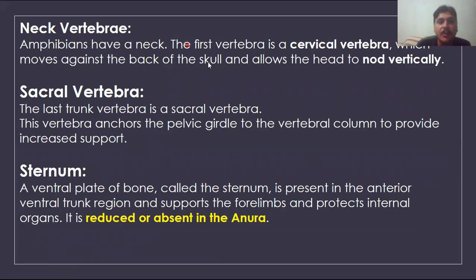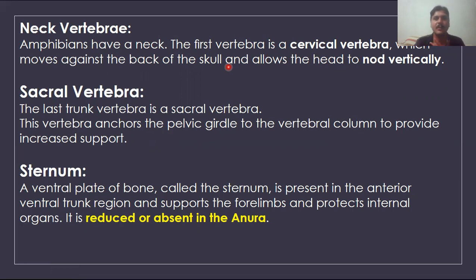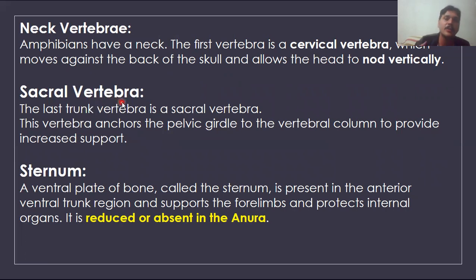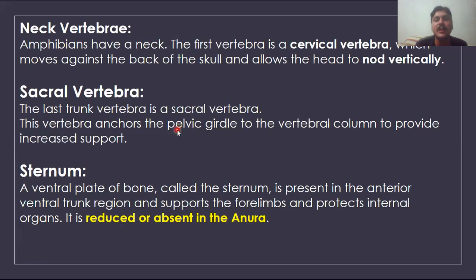The vertebral column has different regions. The first is the cervical or neck vertebra — prominently the atlas — which allows nodding movement (up and down) but not rotation, due to the absence of the axis (second cervical vertebra). Humans can rotate the neck because of the axis. The sacral vertebra connects to the pelvic region. There are also pre-sacral and post-sacral vertebrae.